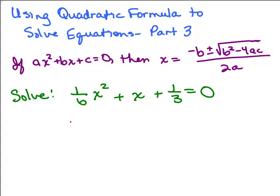This is in standard form and you could say a is 1/6, b is 1, and c is 1/3. But when you plug this into the quadratic formula it gets pretty complicated looking with complex fractions. There's an easier way to deal with this. Since it's an equation, you can multiply both sides by the least common denominator to eliminate the fractions.